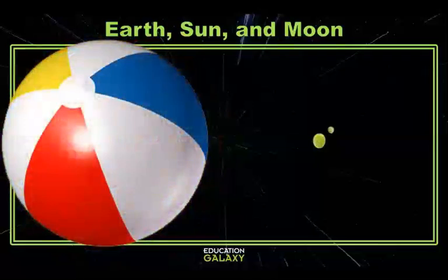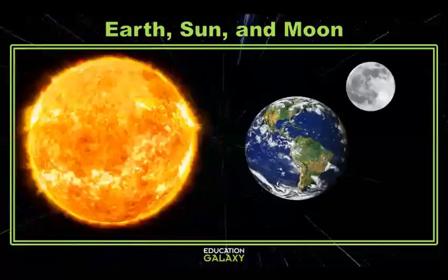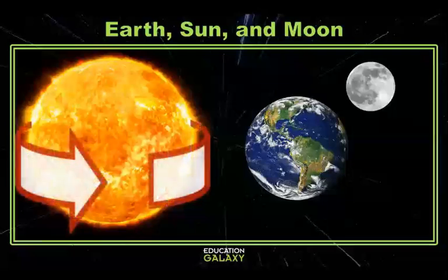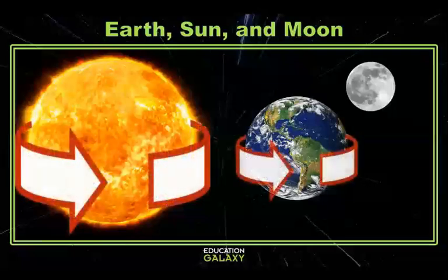The diameter of the Sun is about 109 times Earth's diameter. The Sun is always rotating or spinning like a top, but so is the Earth, and so is our Moon.